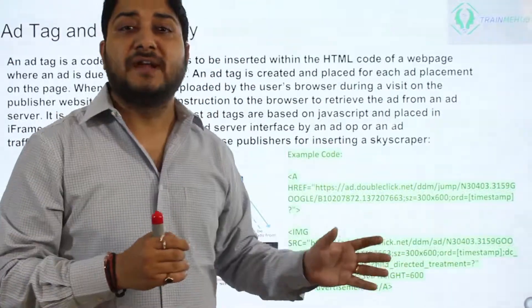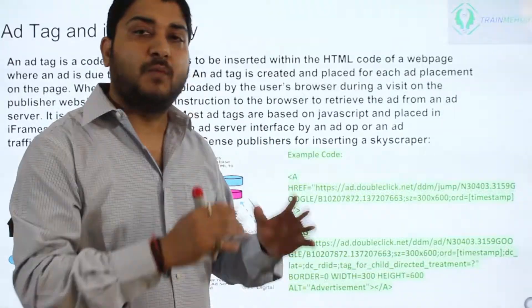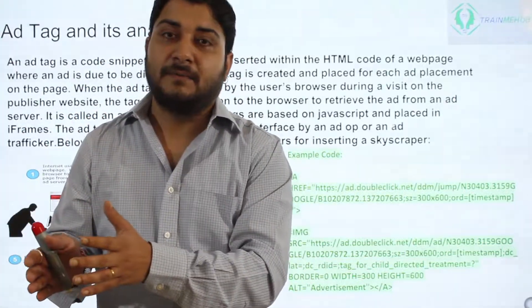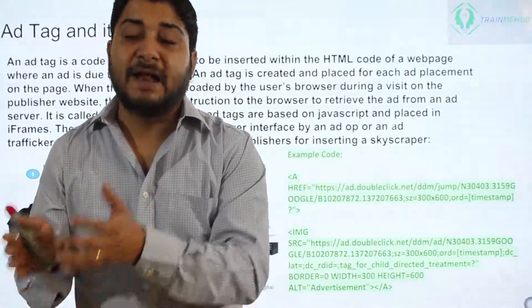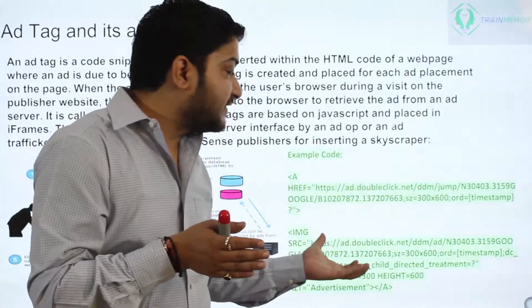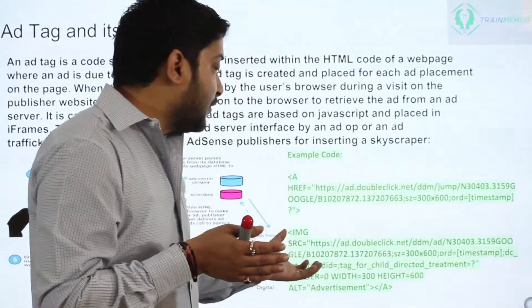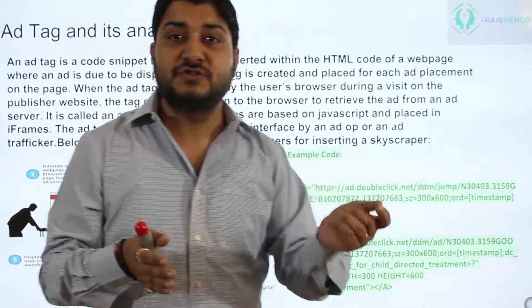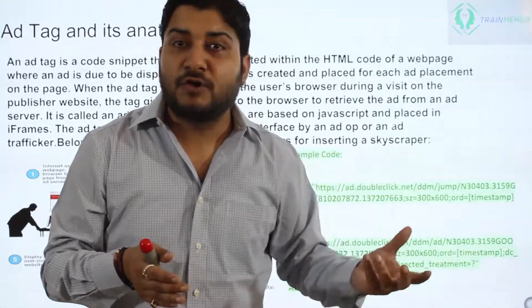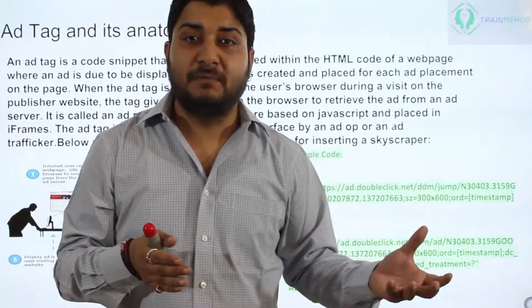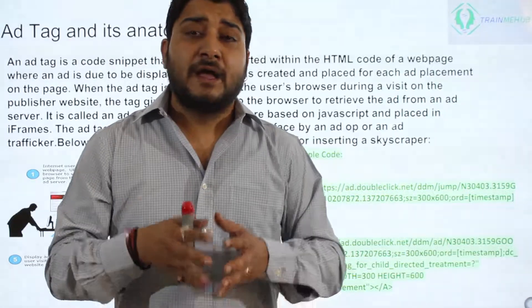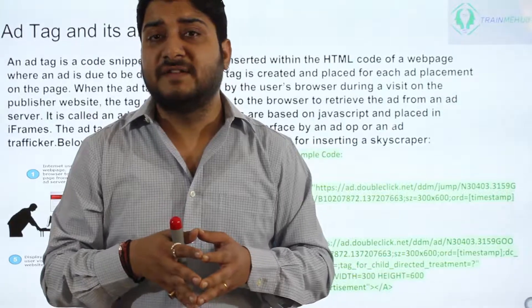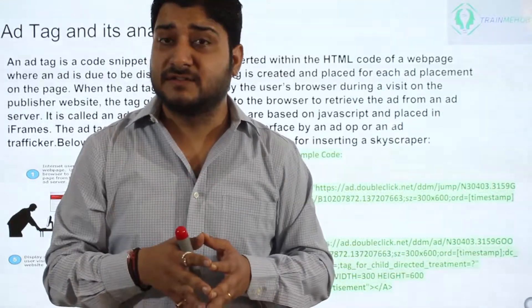If any small changes are made in this particular code, the creative would not be rendered. You need to make sure that while you are setting up your campaign within DoubleClick Campaign Manager, the code is not getting tampered with — you're not making any manual changes. If you do, the respective ad code would not work and your ad would not be rendered. If you have any questions related to ad tags, you can leave them in the comment section and I would love to answer those.